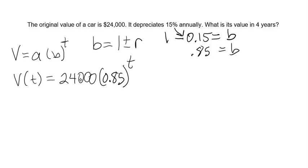So our starting value is 24,000 and our base is 0.85. And we got that by subtracting our rate as a decimal from one.